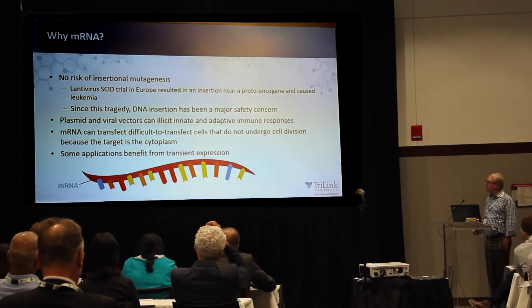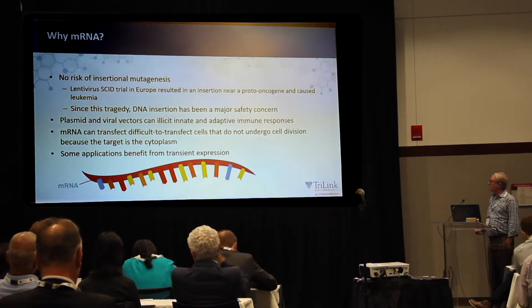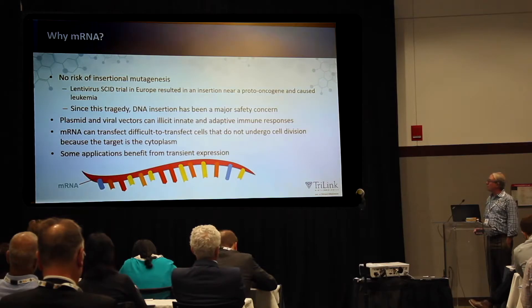Plasmid and viral vectors, which are some of the alternatives to messenger RNA, can also elicit innate and adaptive immune responses.